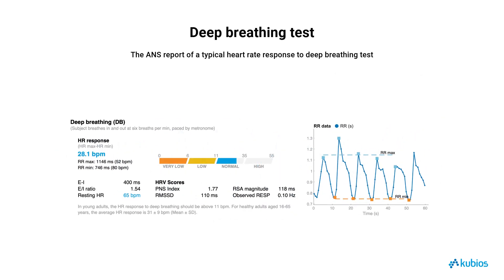To evaluate the heart rate response to deep breathing, we identify the longest RR interval at the end of expiration and the shortest RR interval at the end of inspiration. These intervals are then averaged across the respiratory cycles performed during the challenge. The heart rate response is quantified as the difference between the maximum and minimum heart rates, expressed in beats per minute, calculated from the averaged RR interval extrema points. Alternatively, the response can be reported as the difference or the ratio between the averaged RR interval extrema.